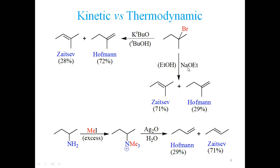When sodium ethoxide is used instead — a non-bulky base — the Zaitsev product dominates because ethoxide can approach the more substituted carbon easily. The more substituted, thermodynamically stable olefin is formed predominantly. In summary: increasing base steric bulk increases Hofmann product; decreasing base steric bulk increases Zaitsev product.